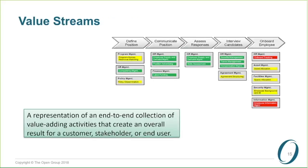A value stream — this is a very simple value stream for a recruitment activity, but it shows the things that have to be done in order to achieve the eventual result: onboarding the employee. It's a representation of the end-to-end collection of value-adding activities that create the overall result. And as you can see on this diagram, one of the big values is actually linking those business capabilities to the value streams — which capabilities do we need to support each of these steps?